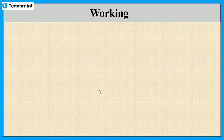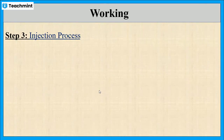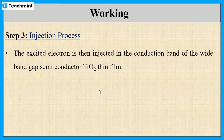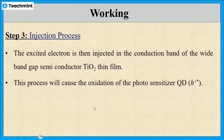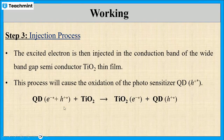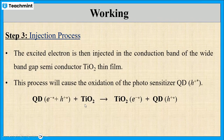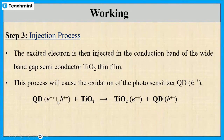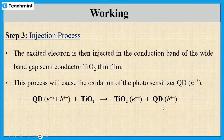In the third step, the dissociated excited electron is injected into the conduction band of titanium oxide (TiO₂), which is a semiconductor. For this process to occur, the excited quantum dot donates its electrons to the titanium oxide. Hence, the oxidation of the quantum dot takes place. In the electron-hole pair of the quantum dot, the electron is donated to the titanium oxide while the hole remains with the quantum dot.